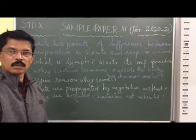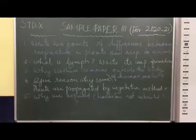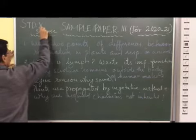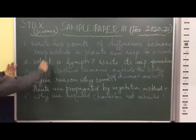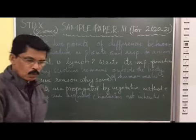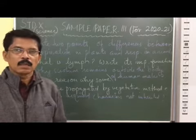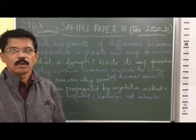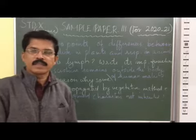Today we are going to discuss the third sample paper of science. We can understand that respiration in plants takes place throughout the body. All parts of the plants can perform respiration - no respiratory organ passage in plants. The gaseous exchange takes place through stomata.